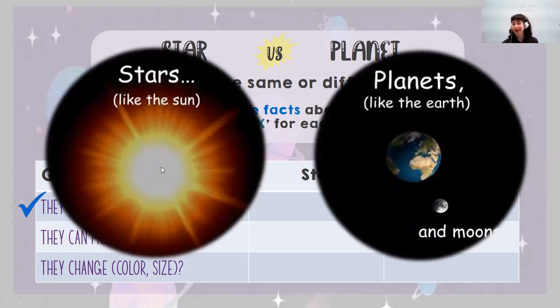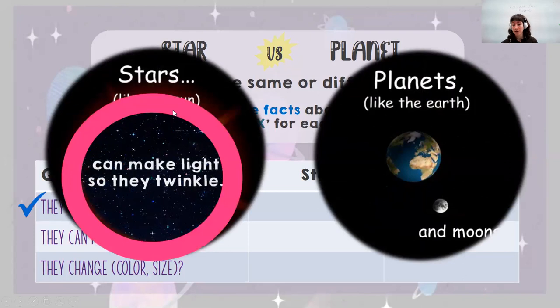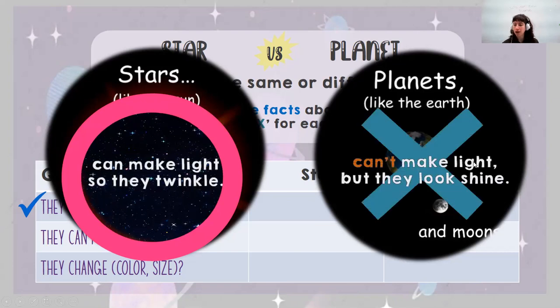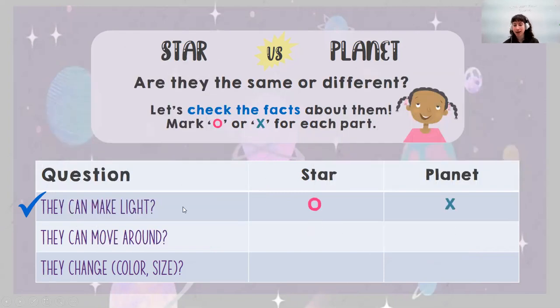So stars and planets, can they make light? Stars like the sun, and planets we're talking about like Earth and the moon. So stars can make light, they twinkle. But planets, no, they can't make light but from the sky far away they may look shiny. So we're going to put O and X.